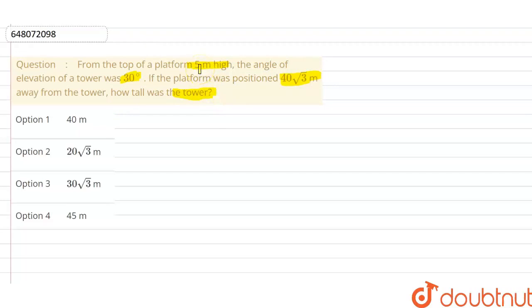तो देख लीजिए, सबसे पहले हम क्या करेंगे, diagram draw कर लेते हैं. जो कहा गया है, उसके according, diagram draw कर लेते हैं. तो ये आपका हो गया एक platform, और ये हो गया आपका एक tower. This is a tower. और इनके बीच की distance भी आपको दे रखी है, distance कितनी है, 40 root 3 meter.